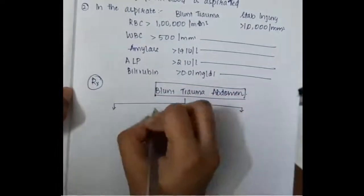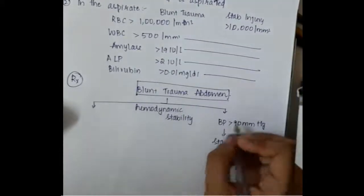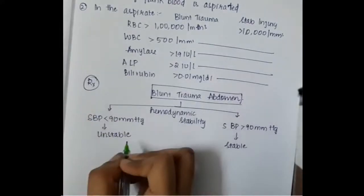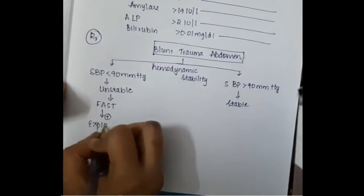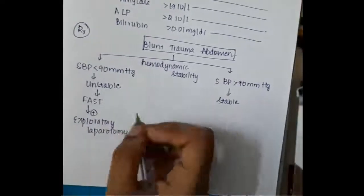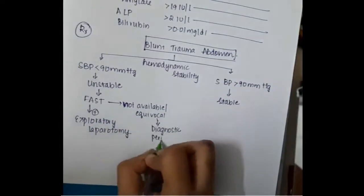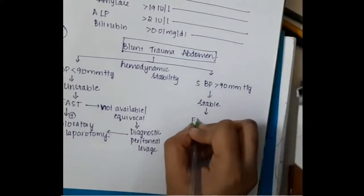Blunt trauma abdomen management is based on hemodynamic stability. If systolic BP is less than 90 mmHg, the patient is unstable; if more than 90 mmHg, the patient is stable. In unstable cases: first do FAST; if FAST is positive, proceed to exploratory laparotomy. If FAST is not available or equivocal, do Diagnostic Peritoneal Lavage; if positive, proceed to exploratory laparotomy.